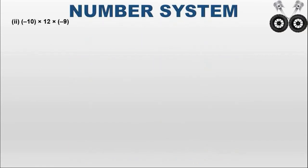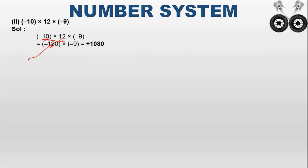Next: minus 10 into 12 into minus 9. First, multiply minus 10 into 12. Both have different signs, so the result is negative: minus 120. Now minus 120 into minus 9: both are negative — same sign — so the result is positive. 120 into 9 equals 1080, so the answer is plus 1080.